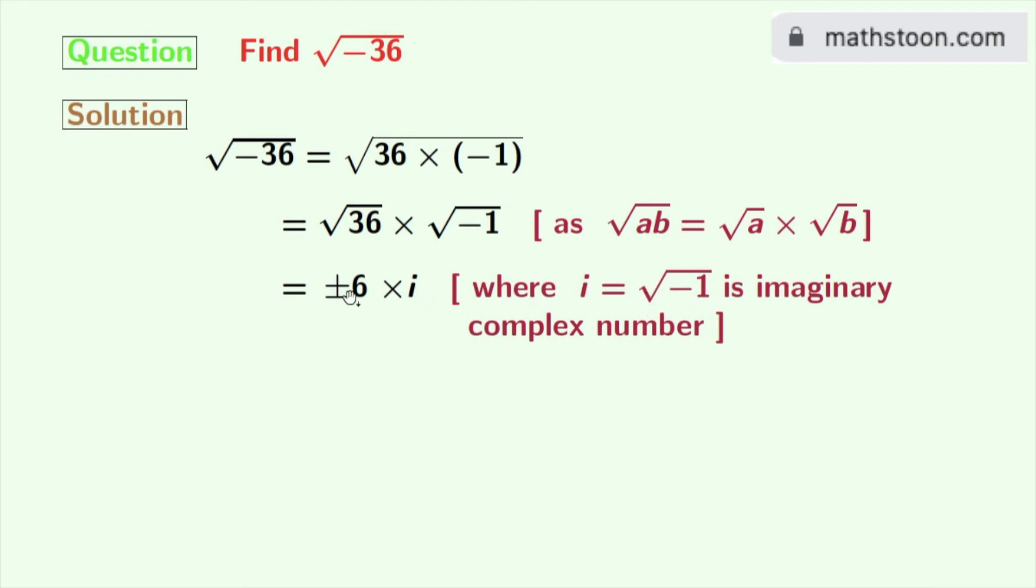Now after multiplying these, we get plus minus 6i. So finally we get square root of minus 36 is equal to either 6i or minus 6i.